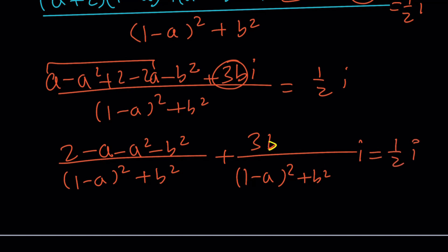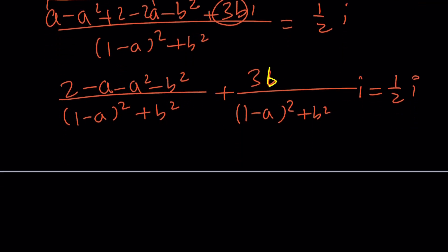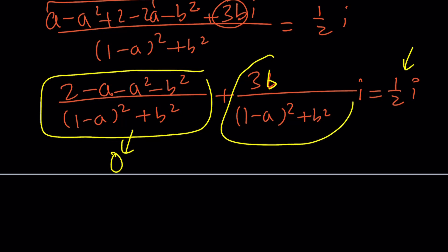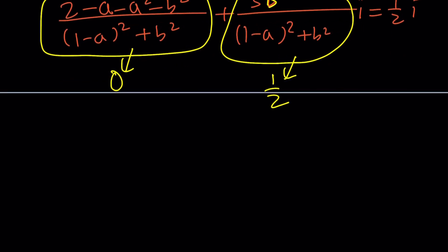So we've got two complex numbers that are equal to each other. And that means the real parts are equal, imaginary parts are equal. But there is no real part on the right hand side. Therefore, this whole thing needs to be 0, which means its numerator should be 0. And the imaginary part is supposed to be 1 half. So we're going to set up two equations from here. That's going to give us a system. We're going to solve that system and see what happens. And then I'll present the second method.